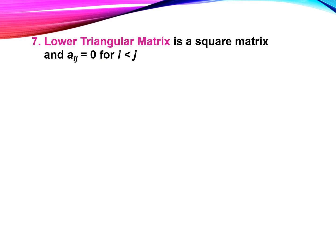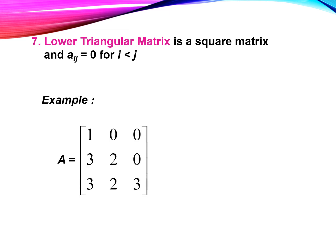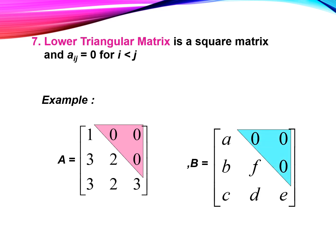Number seven, lower triangular matrix. A lower triangular matrix is a square matrix whose elements above the leading diagonal are zeros. For example, this one is the lower triangular of matrix A, and this one is the lower triangular of matrix B.